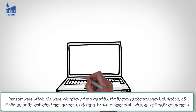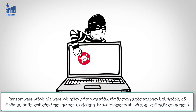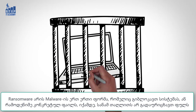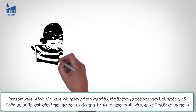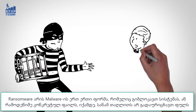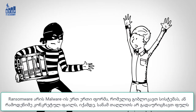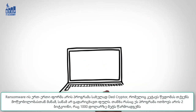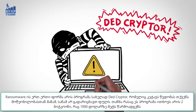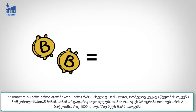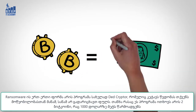Ransomware is a form of malicious software, or malware, which restricts access to your computer or mobile device or encrypts data until you pay a ransom in exchange for accessing your device or data again. One typical example of ransomware is called DeadCryptor, which locks your devices and files until you're forced to pay a ransom. The payment that this malware demands is two bitcoins, which is more than $1,000.